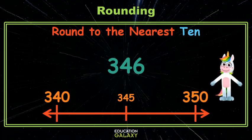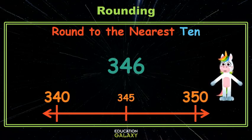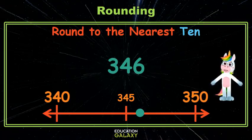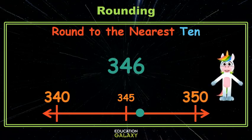Now where does our number go? 346 is a little bigger than 345, so we'll place it here. Now you can see that 346 is closer to 350 than 340. And that's rounding.